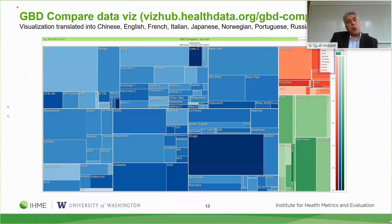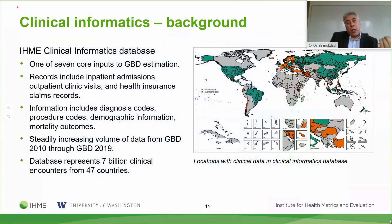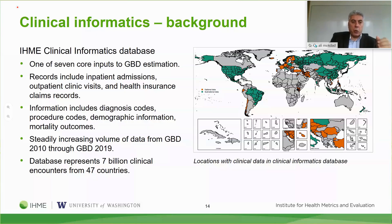GBD Compare is the tool we use to show the visualization of our results—I'll briefly step out of my presentation to show you how to use it. We are also increasingly using clinical informatics in GBD, where we have medical records from 47 countries—about seven billion medical records—that we can use to see what people are admitted for and what kinds of diseases and outcomes they receive when they go to a hospital or clinic.